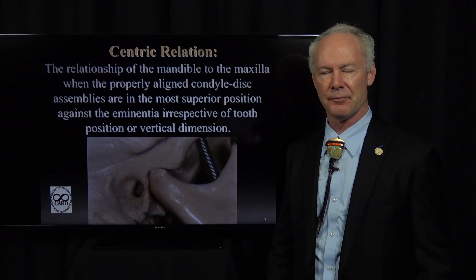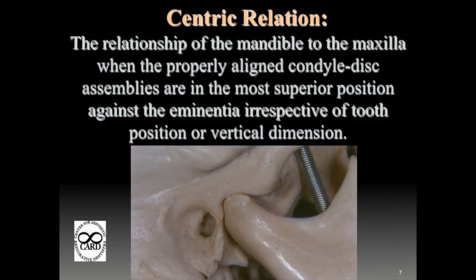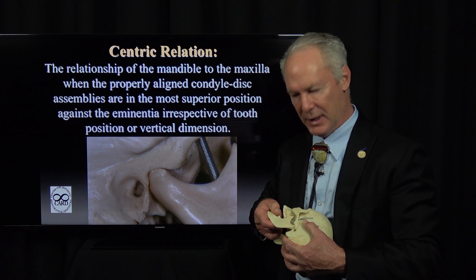I'm going to make this so interesting for you that you're going to find occlusion fascinating. First of all, we need to go through some basic concepts. Centric relation is the relationship of the mandible to the maxilla when the properly aligned condyle disc assemblies are in the most superior position against the eminentia, irrespective of tooth position or vertical dimension.